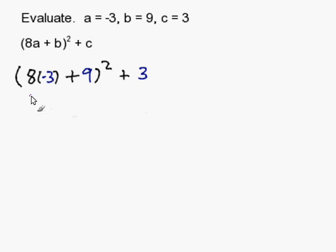Now I simply simplify my expression. 8 times negative 3 is negative 24 plus 9 squared plus 3.